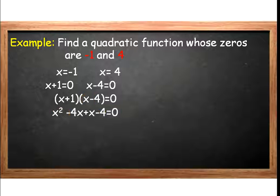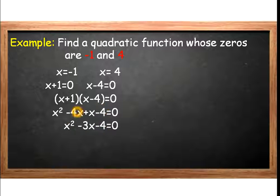Applying the FOIL method: x times x is equal to x squared, x times negative 4 is negative 4x, 1 times x is positive x, and 1 times negative 4 is negative 4. Combining like terms, negative 4x plus x gives negative 3x. The function will be y is equal to x squared minus 3x minus 4.